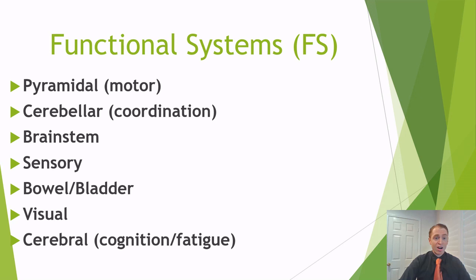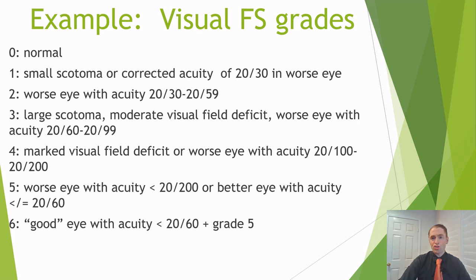The functional systems are basically different neurological symptoms in the body. They are: the pyramidal system, which is motor strength; the cerebellar system, which is fine motor control; brainstem functions, such as eye movements, swallowing, and speaking; sensory function — the ability to feel things in the body; bowel and bladder function, such as constipation and incontinence; visual function; and cerebral function, which is cognition and fatigue.